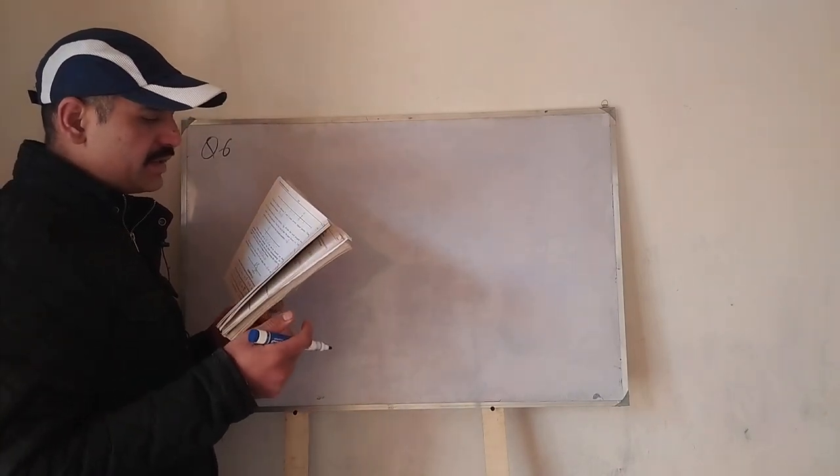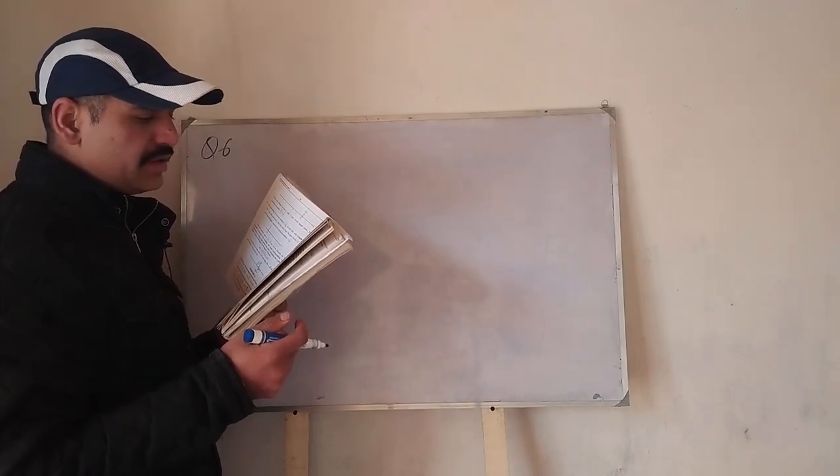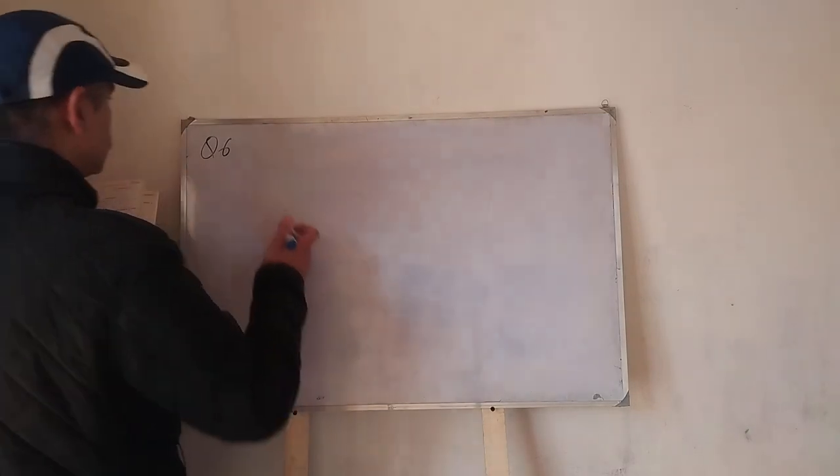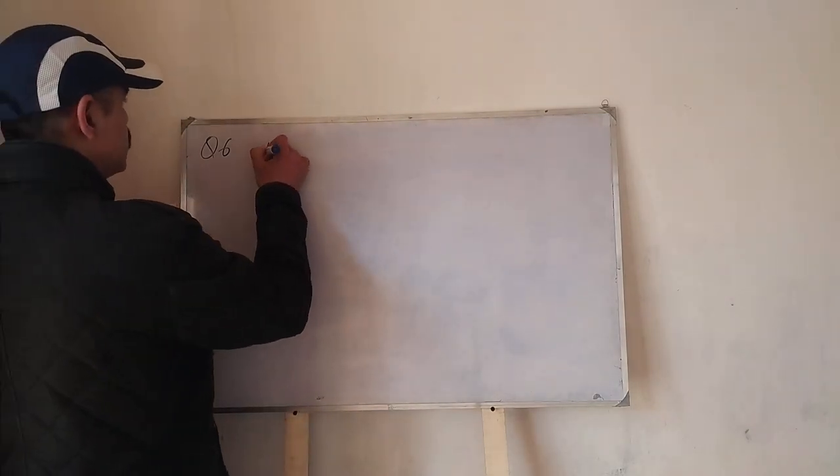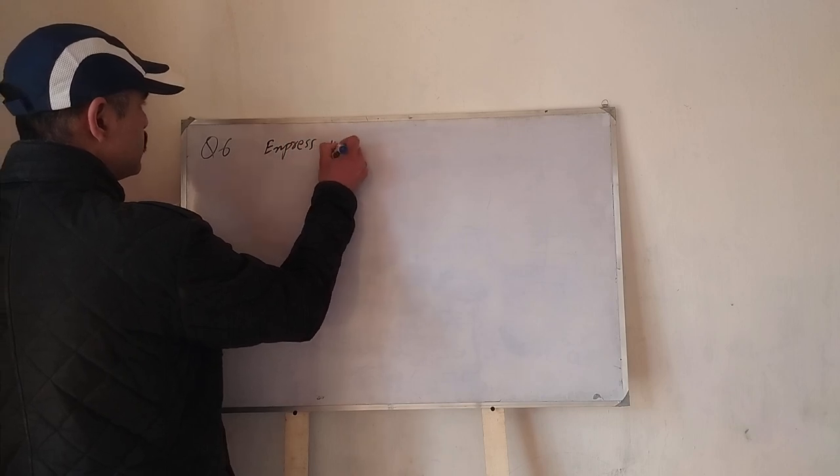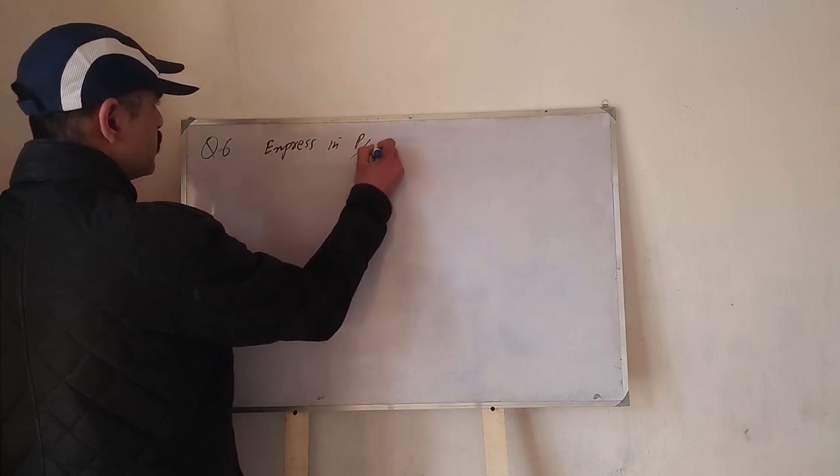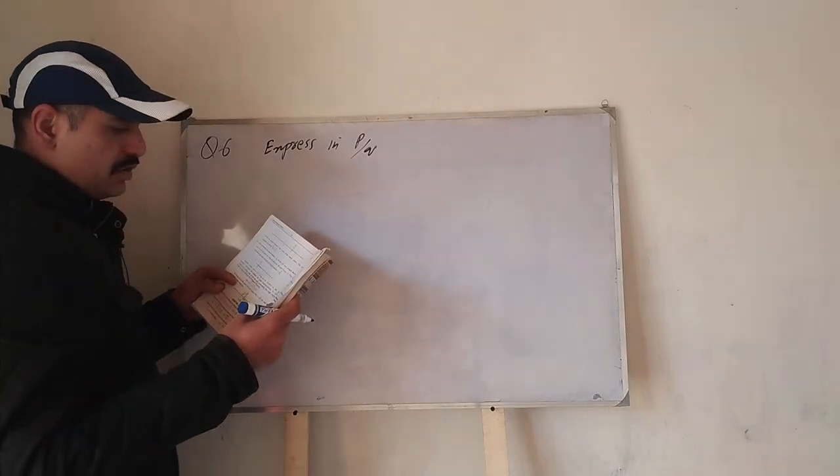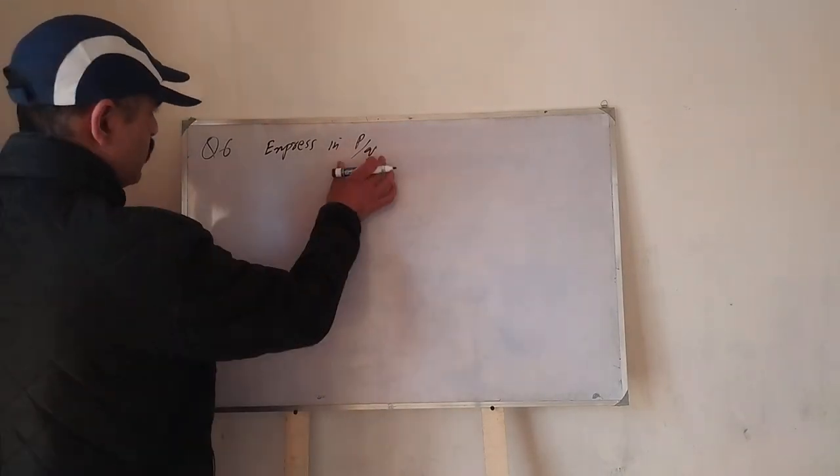Express the following recurring decimals as the rational number P over Q, in P over Q form, that is in rational form.